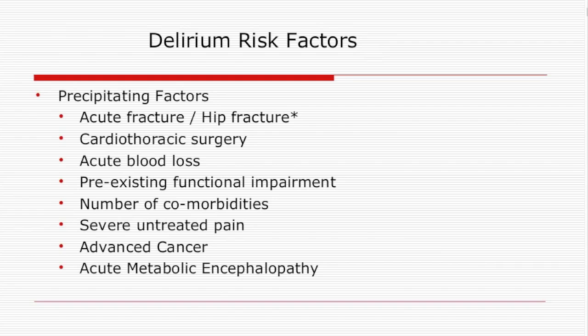The second group are precipitating risk factors — some of which we unfortunately impose on patients when they come into the hospital, such as poly-catheterization and IV hydration, which restrict movement and increase delirium risk. Acute hip fracture patients generally have a 30% chance of being delirious on admission. Cardiothoracic surgery also significantly increases delirium risk, which may relate to decreased blood supply or increased anesthetic use around the time of surgery. Acute blood loss can also precipitate delirium.